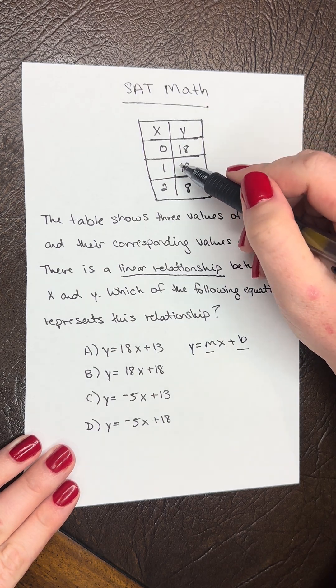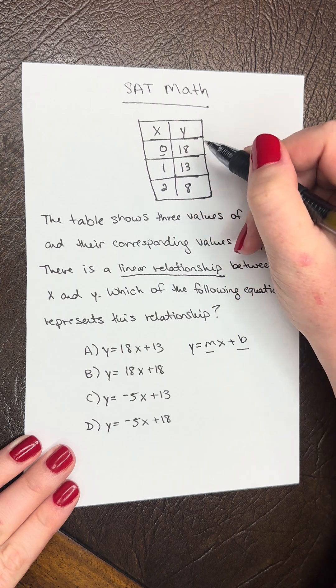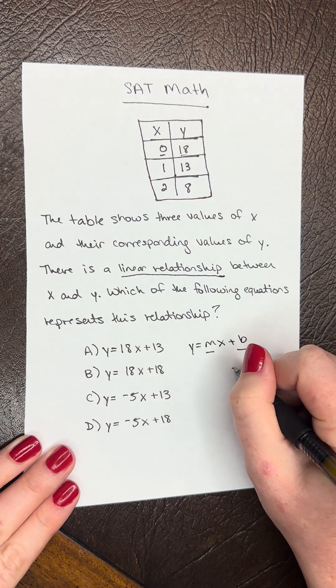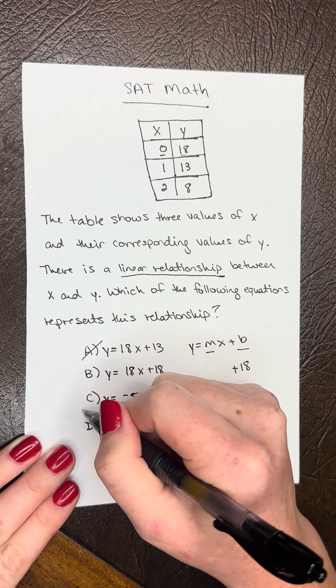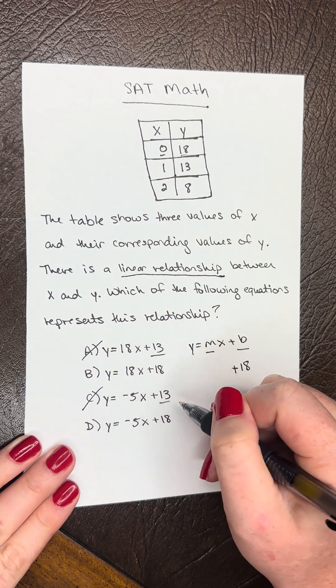So we know from the values in the table, when x is 0, y is 18. So we're going to be looking for plus 18 in our equation. So we can eliminate a and c, because we have 13 there, not 18.